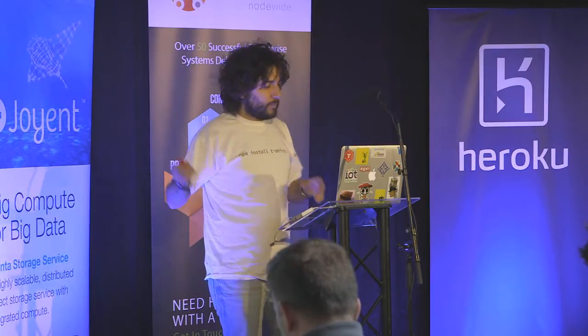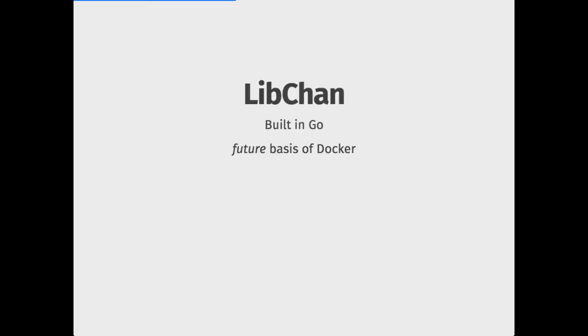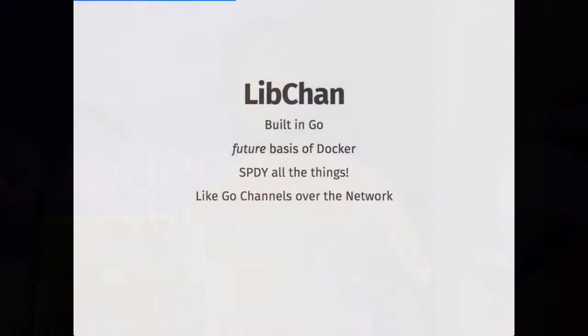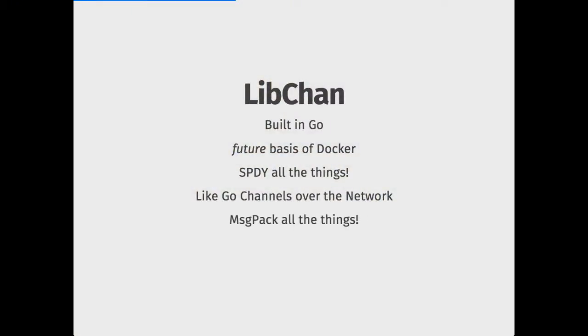This went into a library called LibChan. You might have heard about it, also related to libswarm. It's built in Go. It's built on Speedy — I hope you all know about Speedy. There's a very nice implementation of Speedy from Fedor, who is speaking later. It's like Go channels over the network. It's built on MessagePack — so it's fully binary. You can send JavaScript objects, arrays, whatever. It uses the latest MessagePack specification, which is not compatible with all libraries out there. And it's unidirectional.